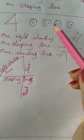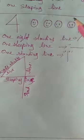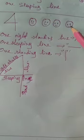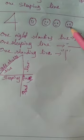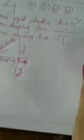First count 1, 2, 3 and 4. How we will write the 4?